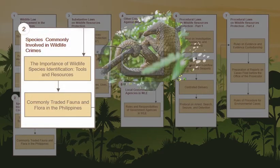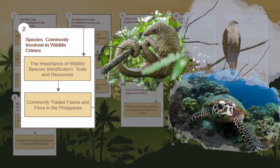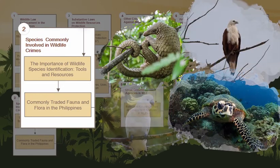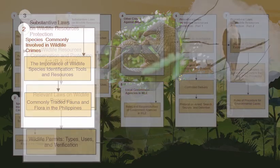Species Commonly Involved in Wildlife Crimes, the second module, will help you identify and differentiate between commonly traded and threatened plants and animals, and gives a range of tools and resources you can use in their identification and handling.